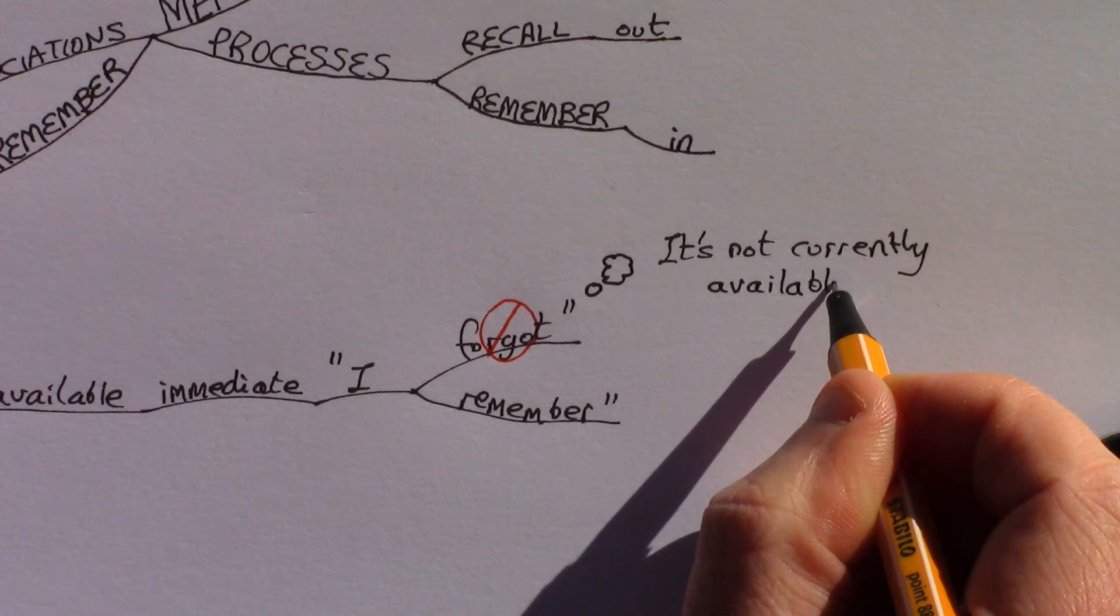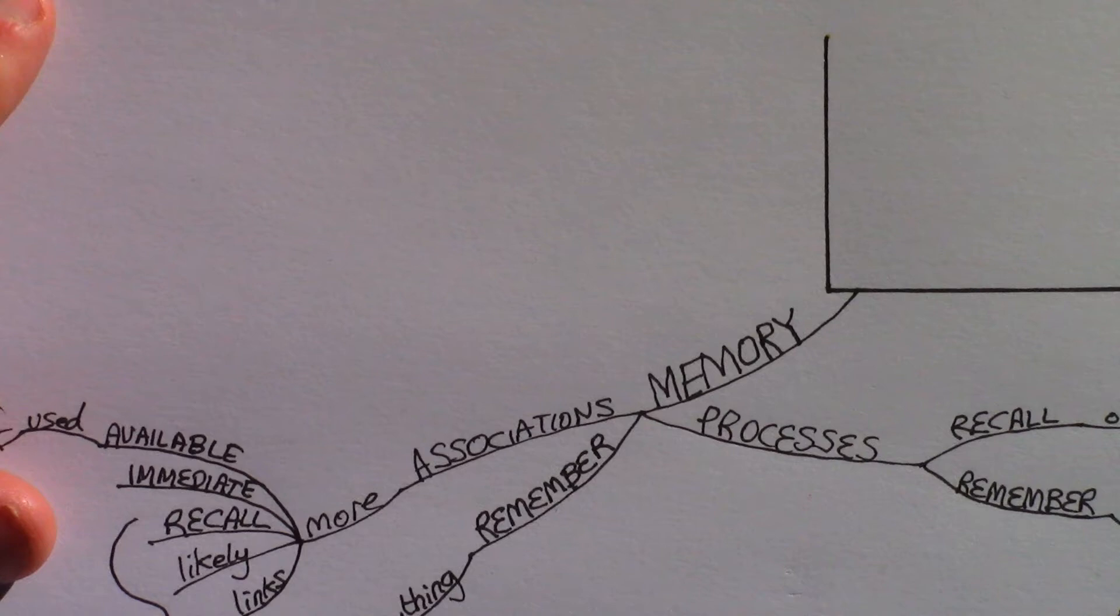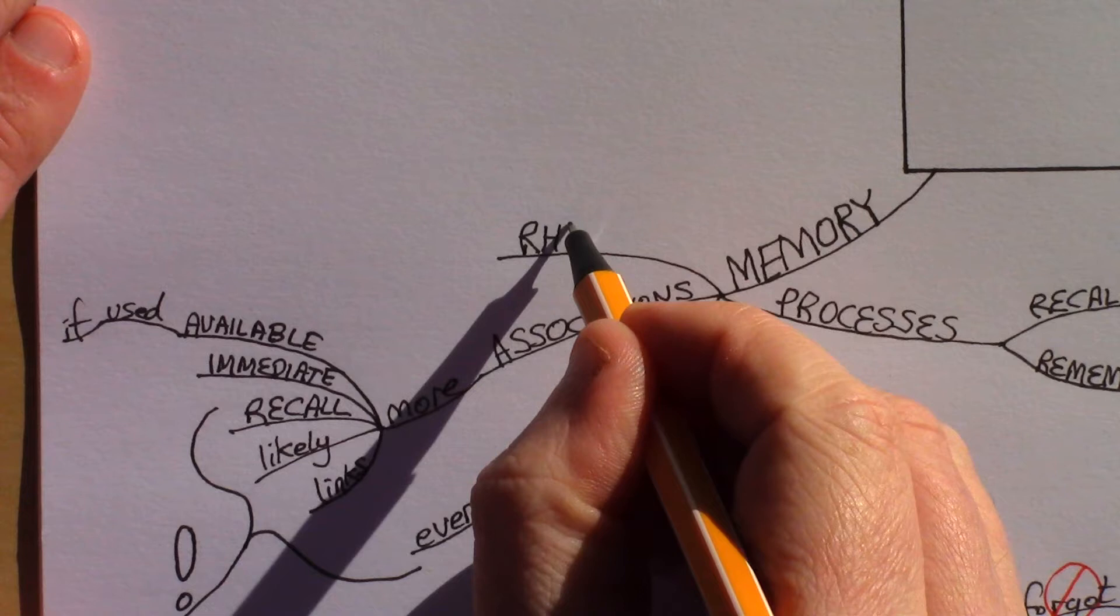What we can actually say or think is: it's not currently available, I want it as soon as possible. As we can give our brains instructions and get our brains working for us. Fourth, how long our brains keep things available for immediate recall follows a delightfully simple and specific rhythmic pattern that we can use for our advantage.